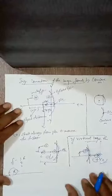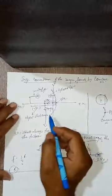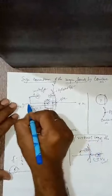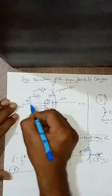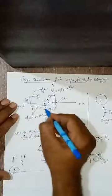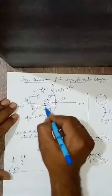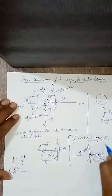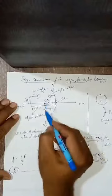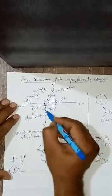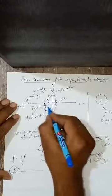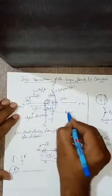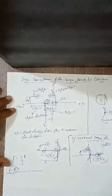Now about the height of the object and image. As you can see, the object is above the principal axis — all heights above the principal axis are positive. All heights below the principal axis are negative. For virtual image, the height of the image is above the principal axis, so it is positive. But for real image, the height of the image is below the principal axis, so it is negative. So this is all about sign convention. Thank you.